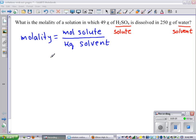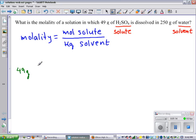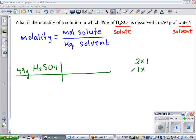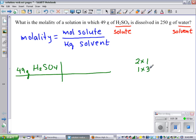The first thing we're going to need to do is change from grams of solute to moles of solute. So we have 49 grams H2SO4, and in 1 mole of sulfuric acid, there are 2 moles of hydrogen with a molar mass of 1, 1 mole of sulfur with a molar mass of 32, and 4 moles of oxygen with a molar mass of 16.